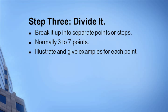Step three: divide it up. After you've written your title, go through the points you want to cover and write each one down as a separate point. You might have three different steps, you might have seven. If you're doing a list there might be 50 different things, but break them all up. Then you'll come back to illustrate and give examples for each point, but the first step here is just to break it into a basic outline.